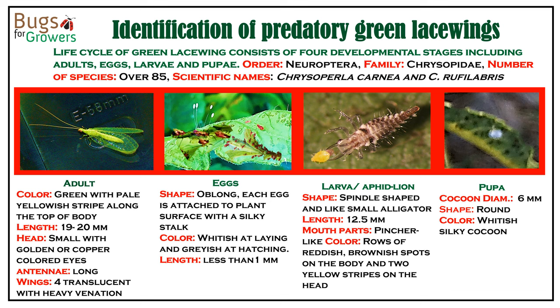Females lay very small, about 1 mm long eggs. Their shape is oblong. Eggs are whitish at laying but become grey at hatching. As shown in the photograph, each egg is attached to the plant surface with a silky stalk.